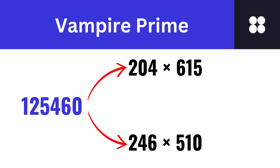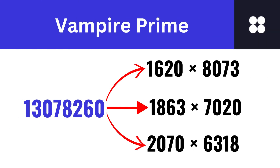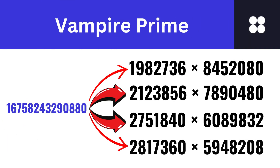Look at the number 125460. It can be expressed as 204 multiplied by 615, and also as 246 multiplied by 510. The first vampire number with three pairs of FANGs is 13078260 — its three pairs of FANGs are shown on screen. The first vampire number with four pairs of FANGs is also shown on screen now.